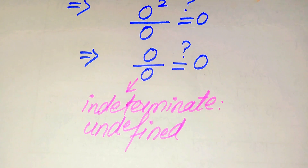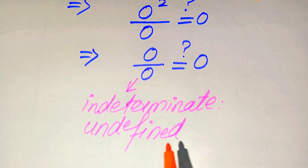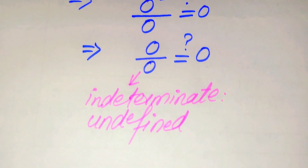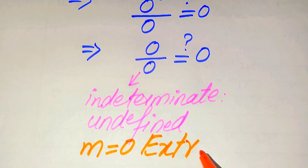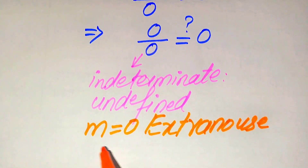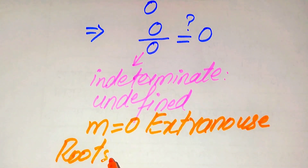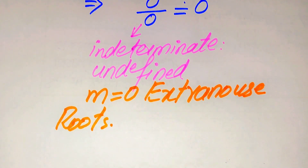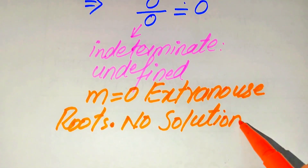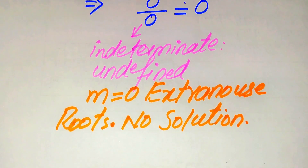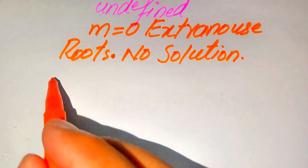Since this is undefined, it cannot equal 0. This shows that m = 0 does not satisfy the question statement, so we conclude that m = 0 is an extraneous root. Extraneous roots are those roots which cannot satisfy the given question statement. Since the only root m = 0 is extraneous, our given equation has no solution.